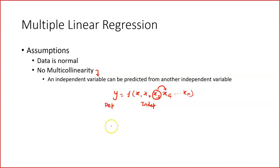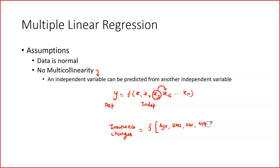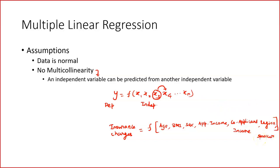Let's go back to the insurance charges example. Insurance charges is dependent on age, BMI, sex, applicant income, co-applicant income, region, and many other parameters, including whether the applicant is a smoker or non-smoker. These are the factors we have been considering to find out the quantum of insurance charges.